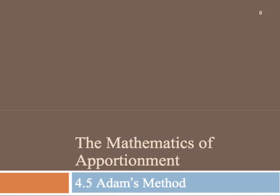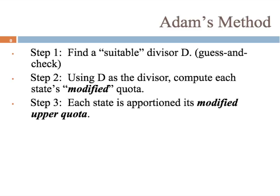This section is on apportionment with Adam's method. Adam's method is very similar to Jefferson's method. The only difference here is that we're using upper quota instead of lower quota.